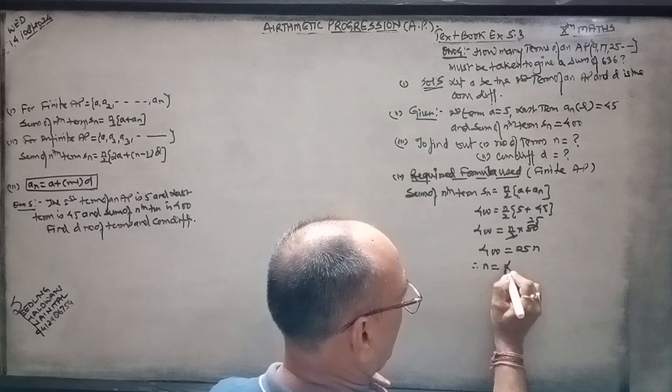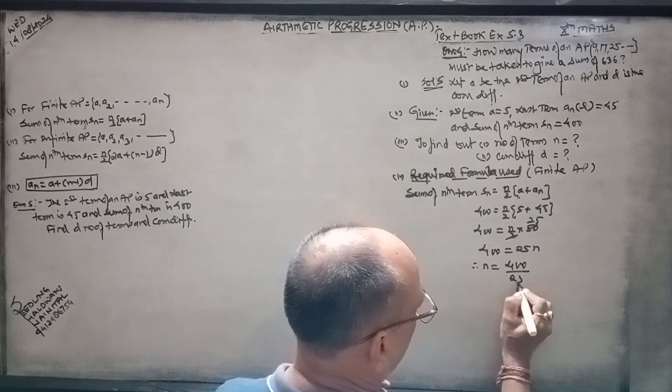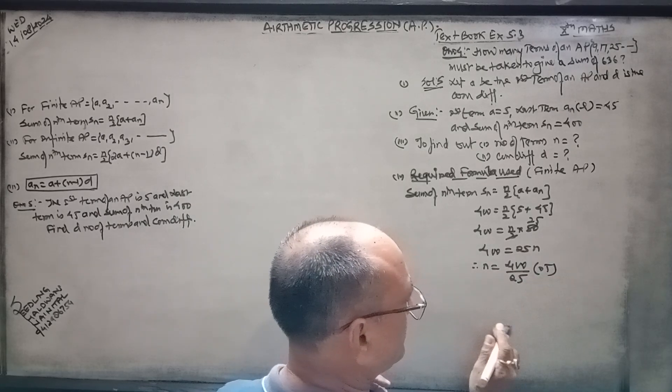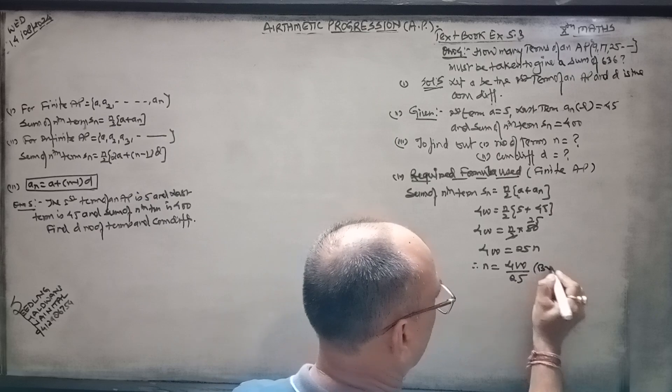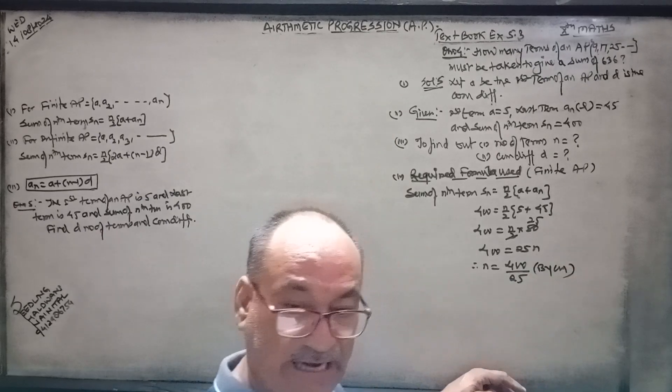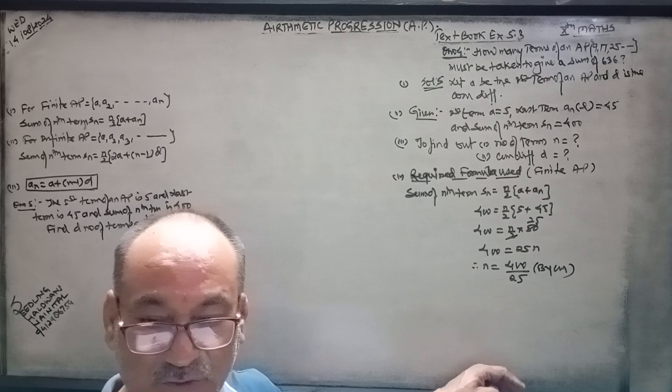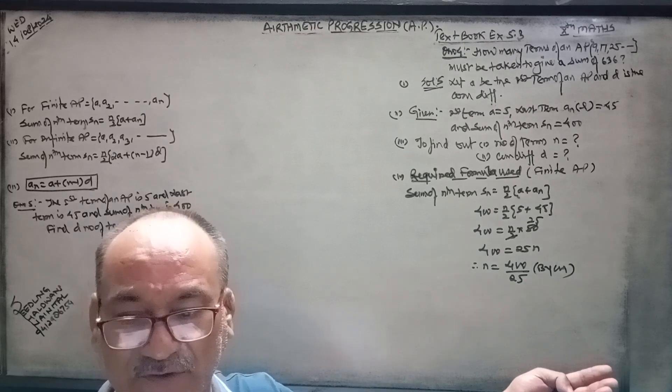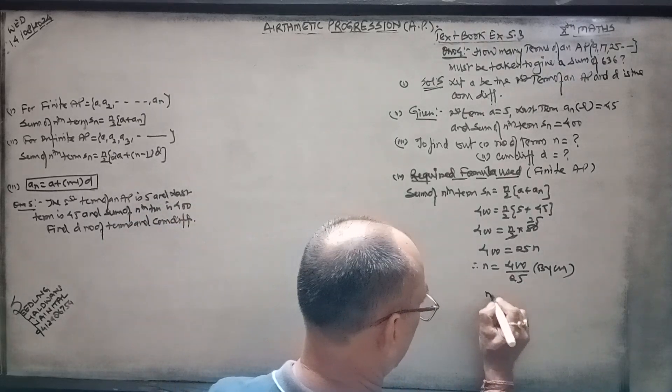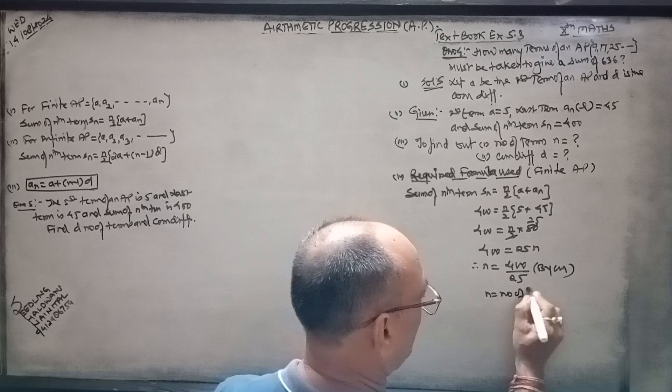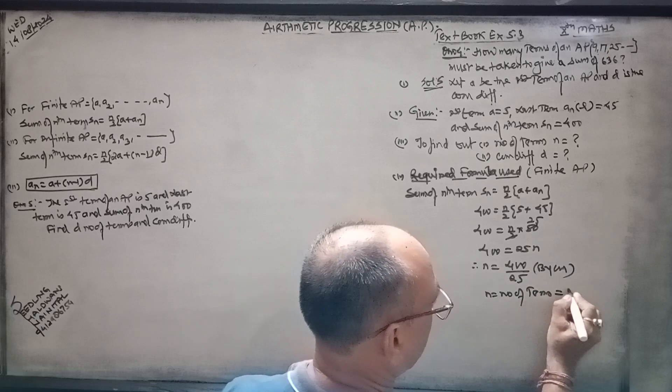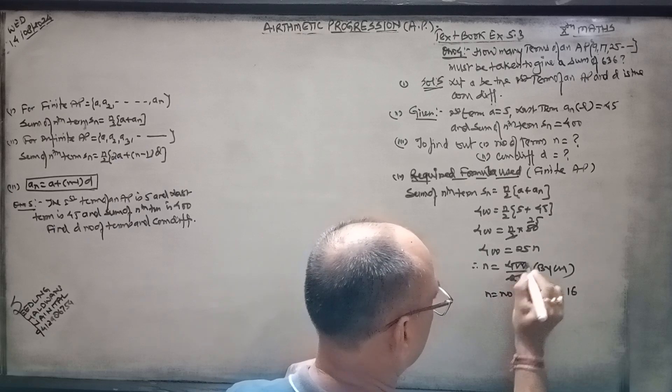Then you have to find out n. N is equal to 400 upon 25, which equals 16. So n equals 16, your number of terms.